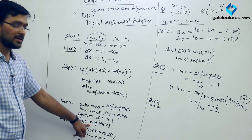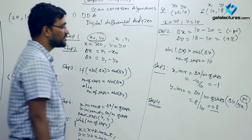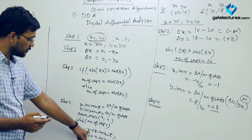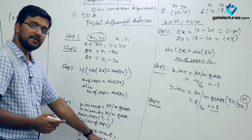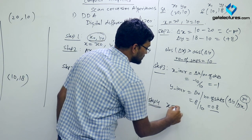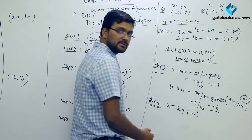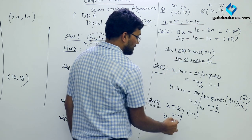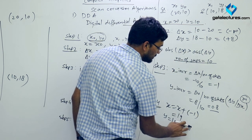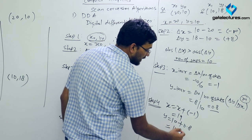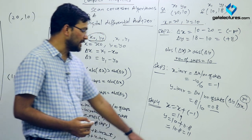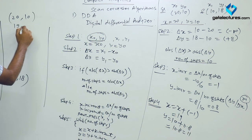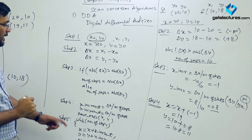We run a loop for the number of steps — 10 times. Each iteration: X = X + increment factor, Y = Y + increment factor. First iteration: X = 20 + (−1) = 19. Y = 10 + 0.8 = 10.8, which we round to 11. So the next pixel is (19, 11).